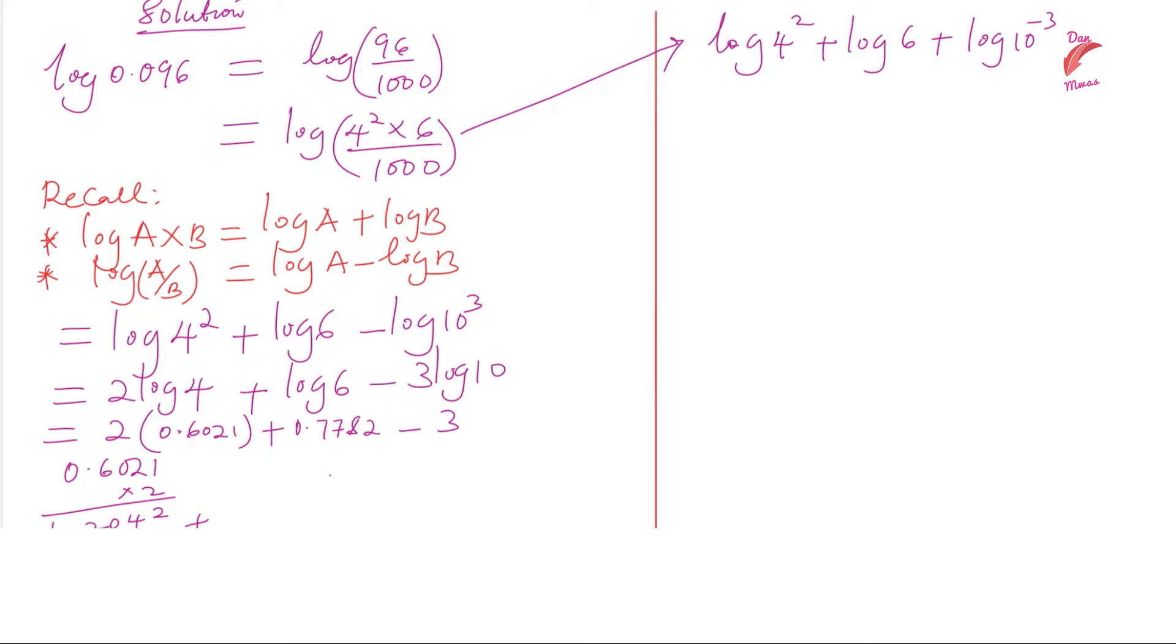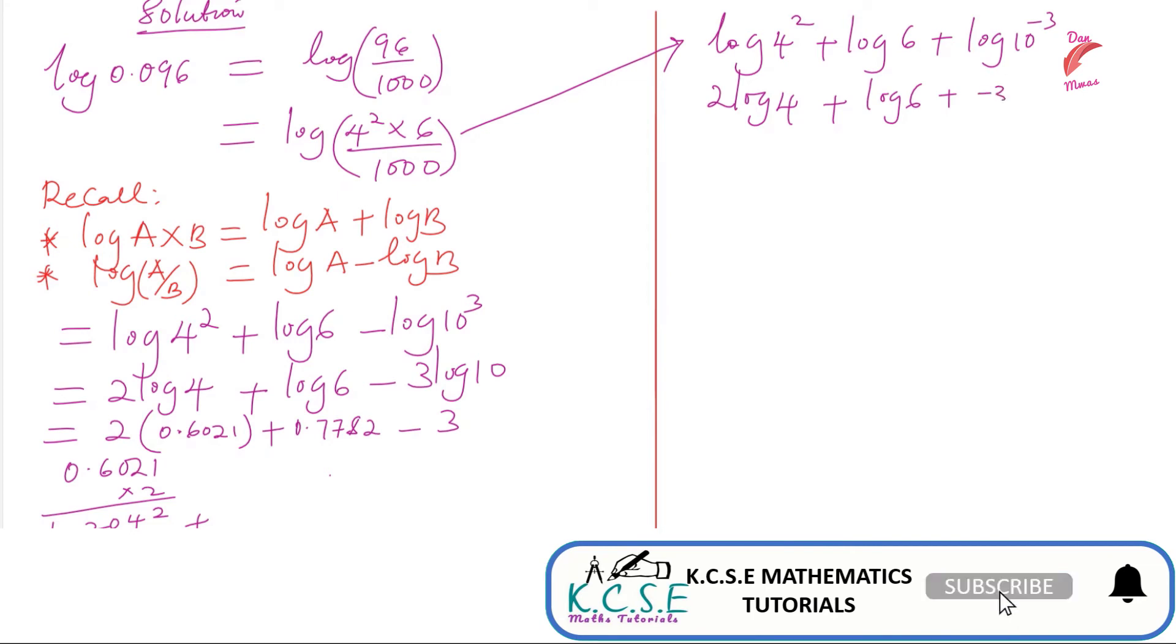This gives 2 log 4 plus log 6, then this will be plus negative 3 log 10. We can write it as bar 3, so we can write it as a negative 3 log 10.